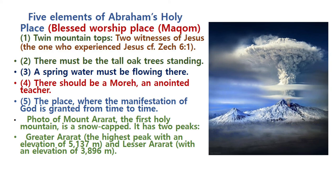Now we must make a conclusion. Five elements of Abraham's holy place. I wish you to hold on at least one or two elements to become the blessed holy place of Abraham — a worship place. Number one element: there should be twin mountain tops. Always a holy place has twin mountain tops. The symbolic meaning — spiritual meaning of two mountain tops — is two witnesses of Jesus. As long as you are a witness of Jesus Christ, you have experienced the power of salvation, power of being born again, and power of getting answered prayer in the name of Jesus Christ. You are very safe.